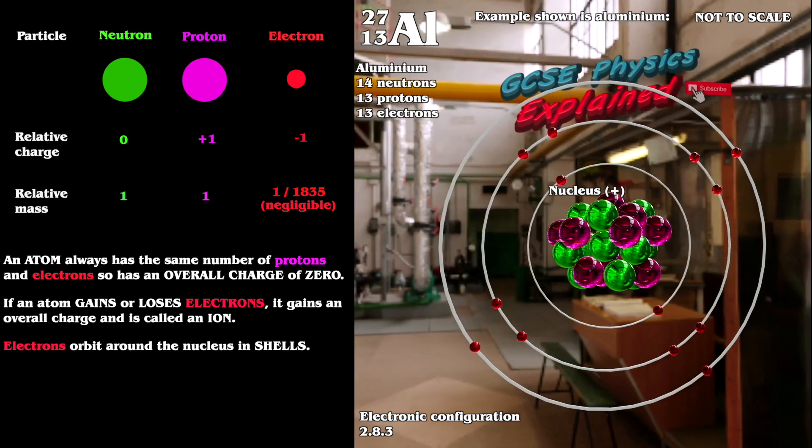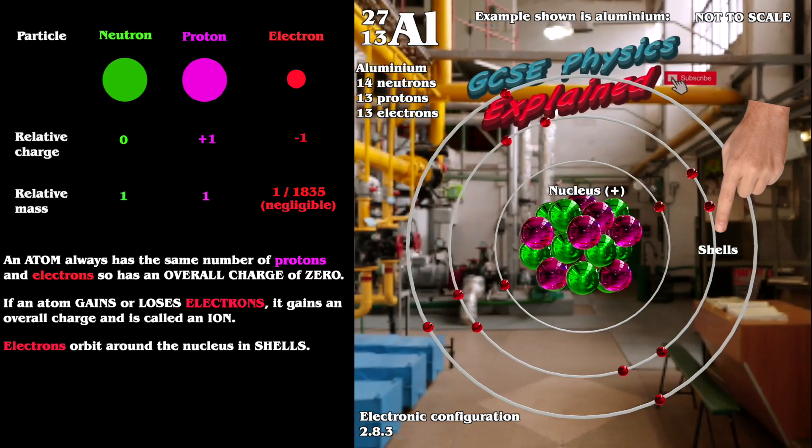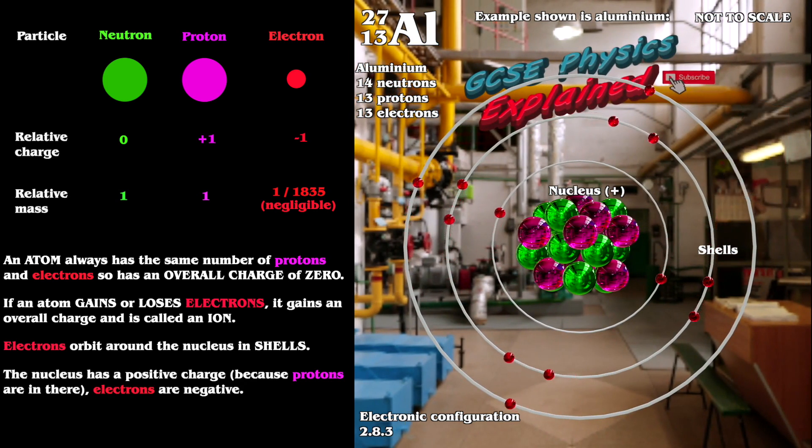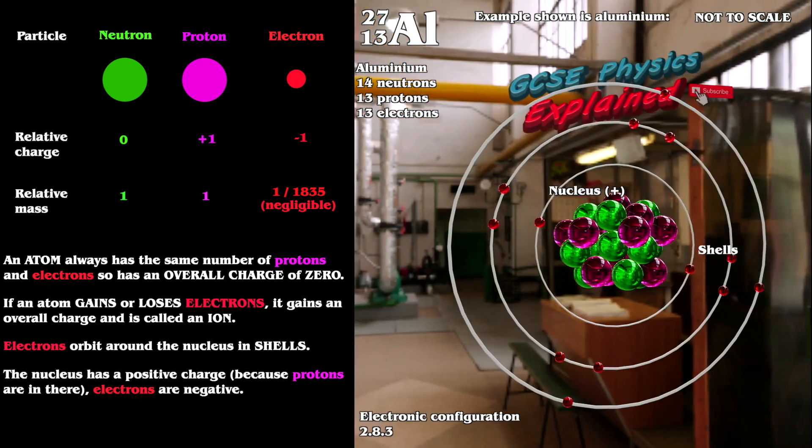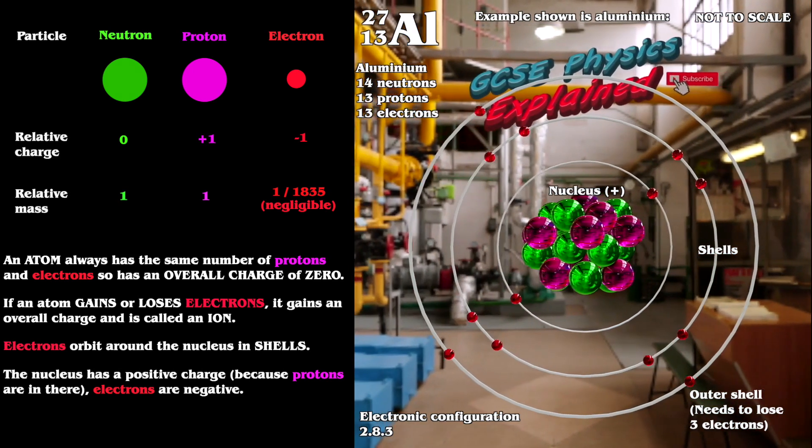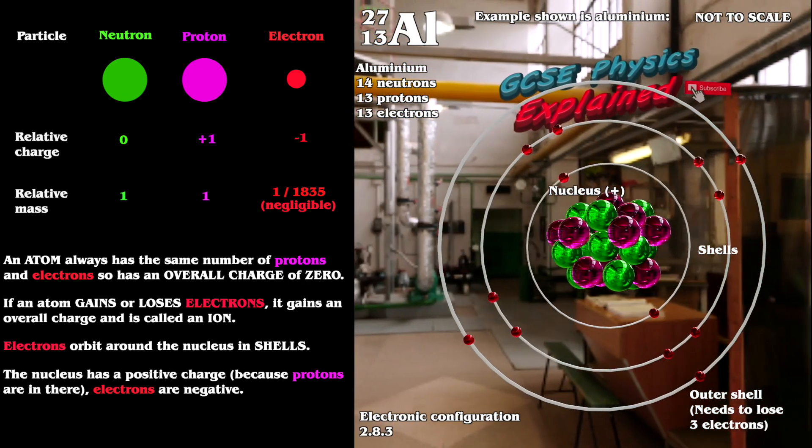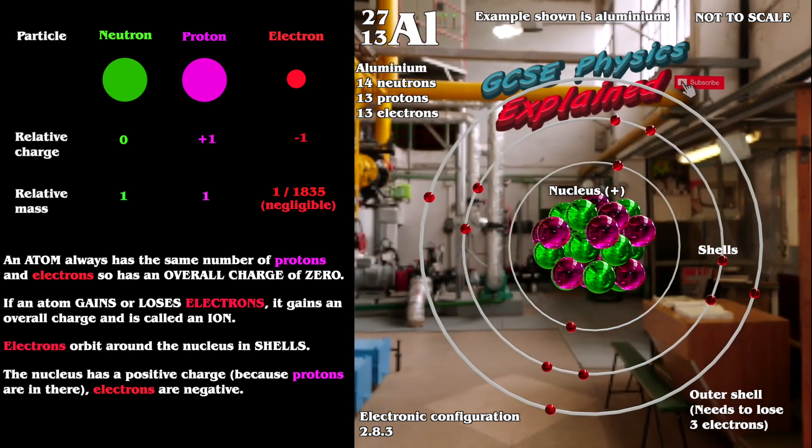Electrons orbit around the nucleus in what we call shells. They are kept in orbit because opposite charges attract. If an atom has a full outer shell, it's stable. Metal atoms don't have full outer shells, so they are reactive. However, metal atoms lose the electrons from their outer shell when they bond together to form positive metal ions.